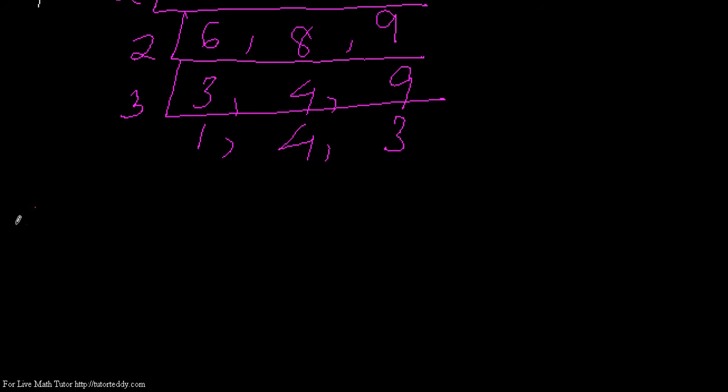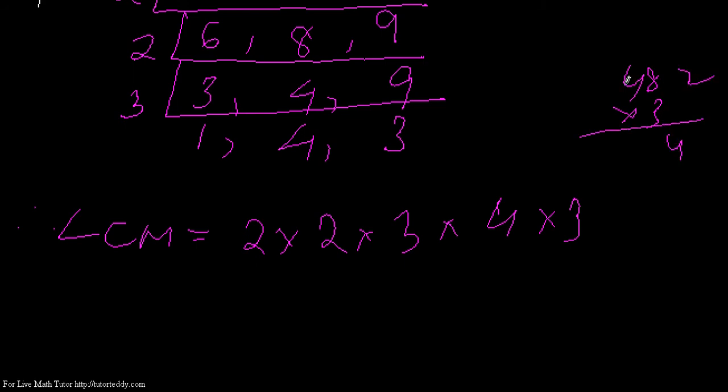So my LCM will be two into two into three into four into three. That is two twos are four, four threes are twelve, twelve into four—four twelves are forty-eight, forty-eight into three—three eights are twenty-four, plus two is one forty-four. So my LCM is one forty-four.